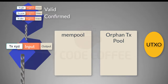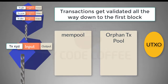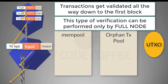Did you notice an important aspect of this type of verification? Every time a node ensures that a transaction input points to a valid transaction output, the transaction gets validated all the way back to the first block — the genesis block. This is because it's a chain of verification: each previous transaction was also validated against its own previous transaction, and so on. In this way, a full node ensures that every validated transaction is part of a valid sequence traceable back to the first block. This type of verification can only be performed by a full node that maintains the complete blockchain.